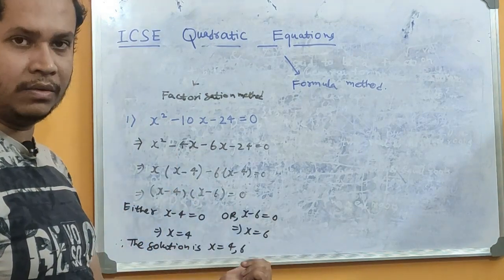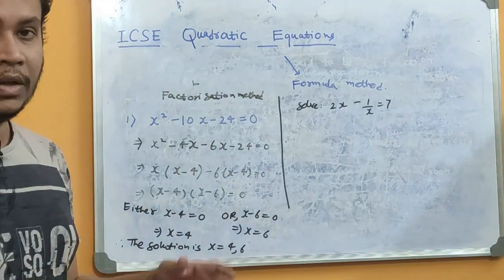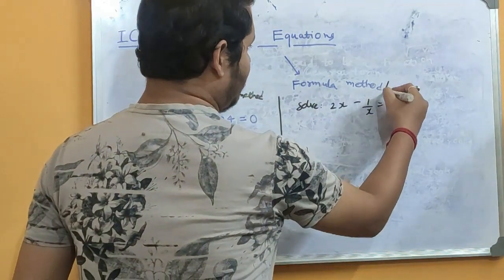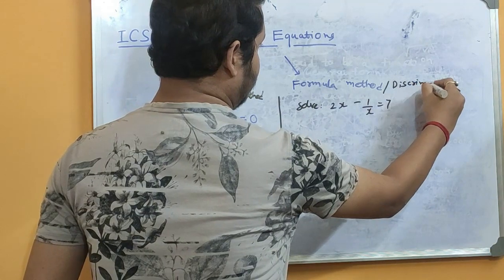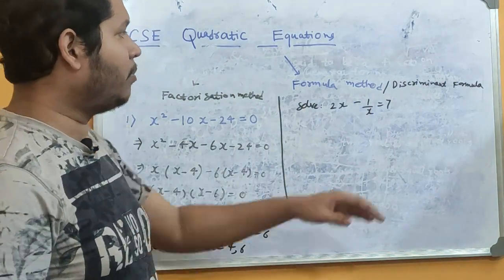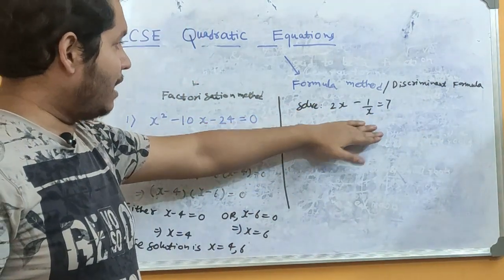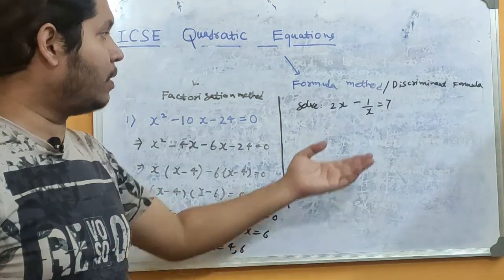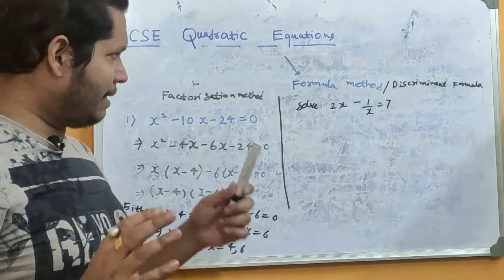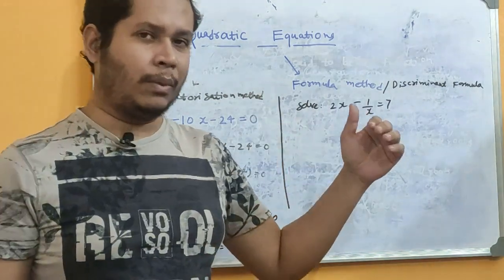As I told you, a quadratic equation will have two roots — and we got two roots. That is the factorization method. Now I'll show an example of the formula method, also called the discriminant formula or Sridharacharya's formula, because it was given by Indian mathematician Sridharacharya. Now, this next equation is not in general form, as you may often encounter in ICSC.